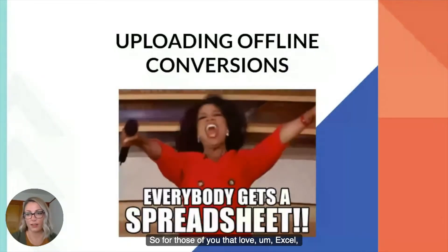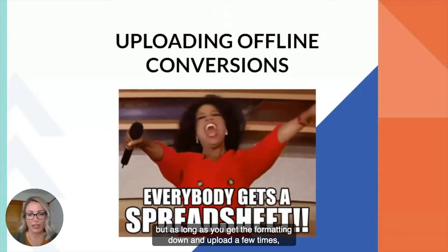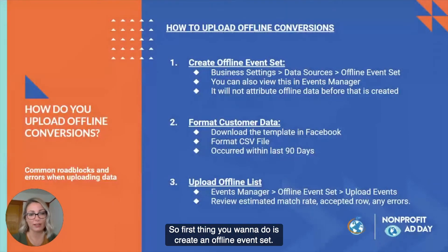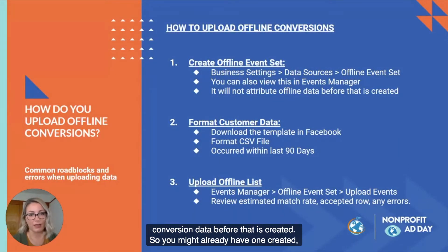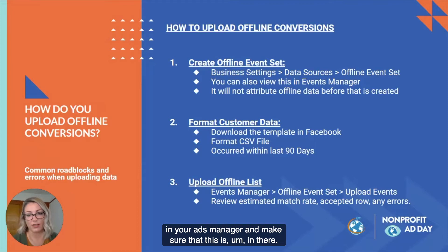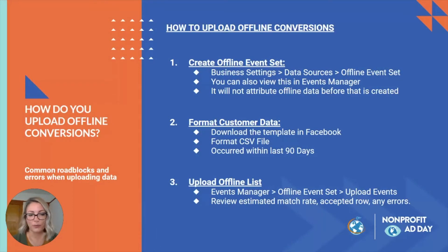For those of you who love Excel, you're going to love this part. It's a little tricky at first, but once you get the formatting down and upload a few times, it becomes a much smoother process. The first thing you want to do is create an offline event set — this is critical because Facebook will not attribute any conversion data before that is created. You might already have one, but double check in your Ads Manager. Go to Business Settings, then Data Sources, and create your offline event set. You can also go to Events Manager to do this. Name it, set it to auto tracking, and you're good to go. It takes just a few minutes to set up.